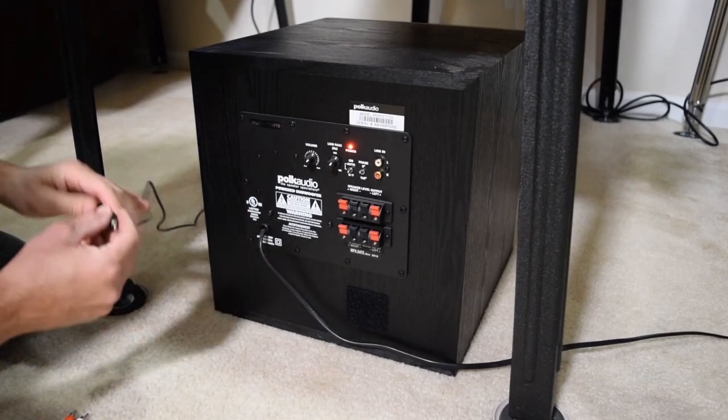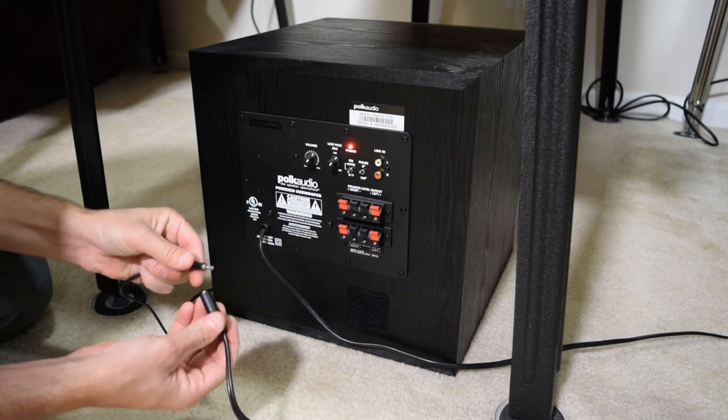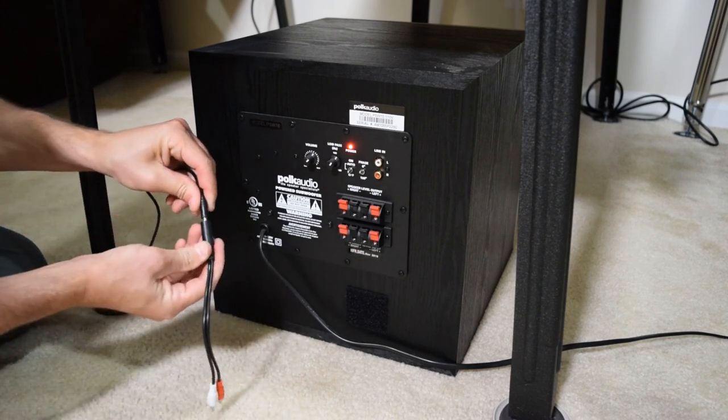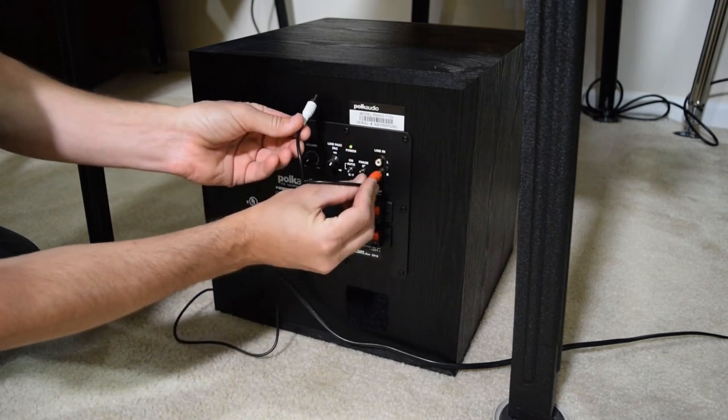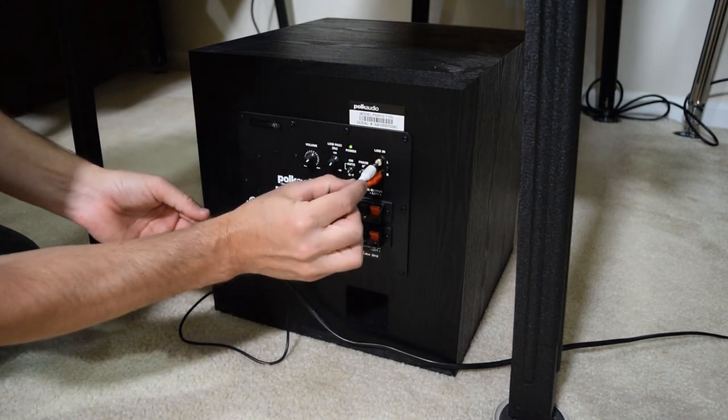If you are only hooking up one pin to your sub, connect the 3.5mm cable to the RCA Y cable. Then plug the red and white connectors into the back of your subwoofer.